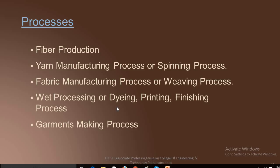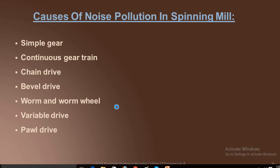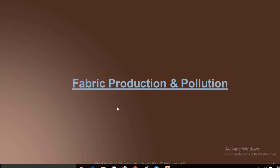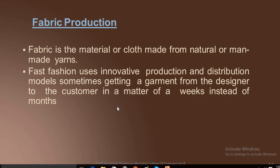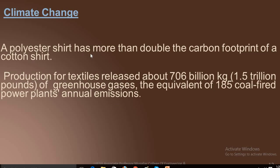Now we will see some of the production mechanisms — fabric production. Fabric is a material or cloth made from natural or man-made yarns. Fast fashion uses innovative production and distribution models, sometimes getting garments from the designer to the customer in a matter of weeks instead of months. Climate change is one major concern.